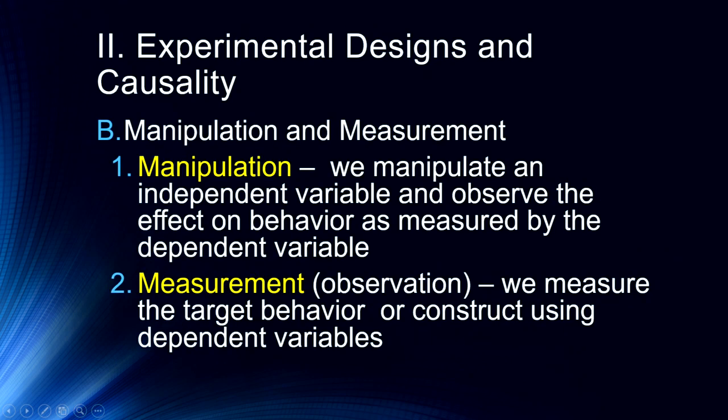Manipulation is a critical part of any experiment. We manipulate an independent variable, or more than one independent variable, and then we observe the effect on behavior as measured by the dependent variable. We measure our target behavior or construct using dependent variables. It's really important to understand that the measurement we are engaging in is a dependent variable. The thing we're interested in observing is usually our construct. So memory might be a construct, while our dependent variable could be recognition memory, free recall, or cued recall.